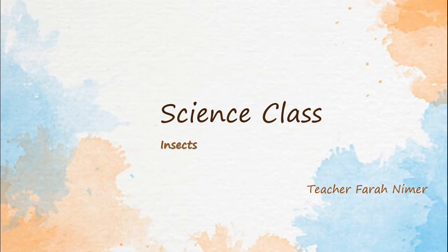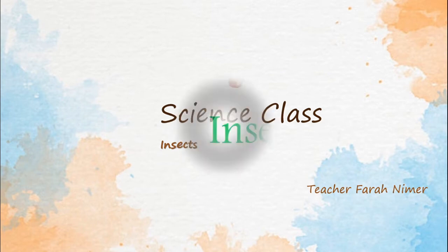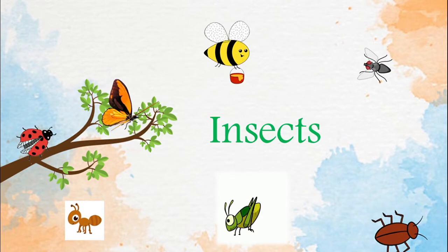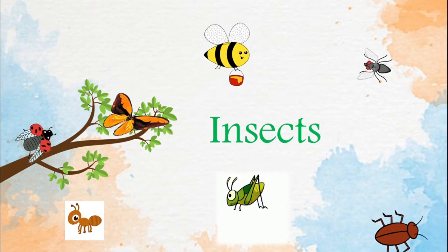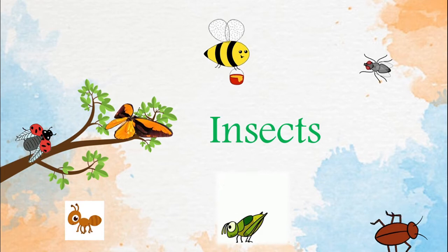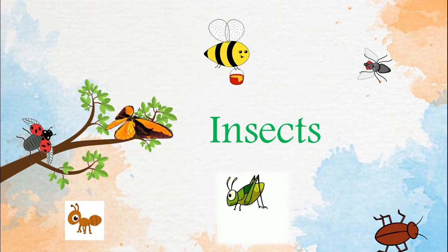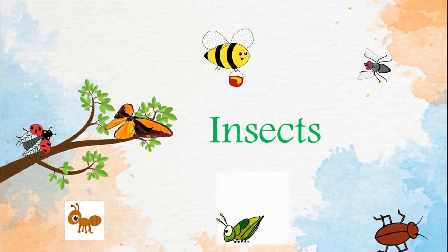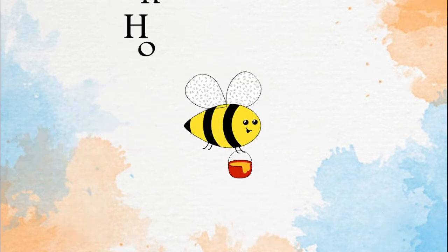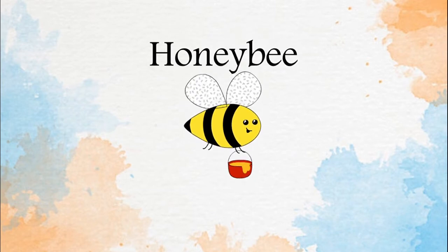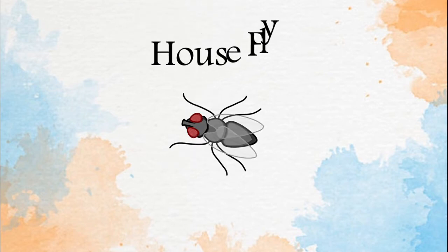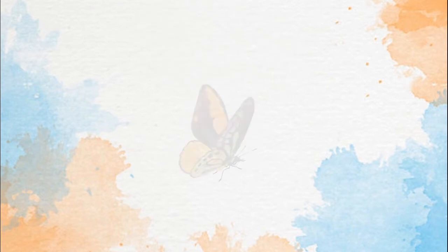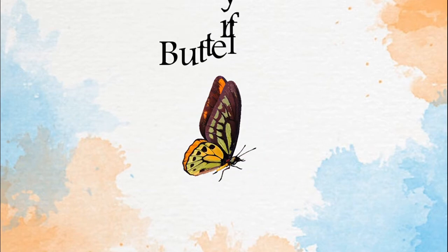Hello everyone! In this video we are going to learn about insects. Insects are the largest animal group on earth — no animal group in the world is larger than insects. They are everywhere. Insects fly: honeybee, housefly, butterfly.